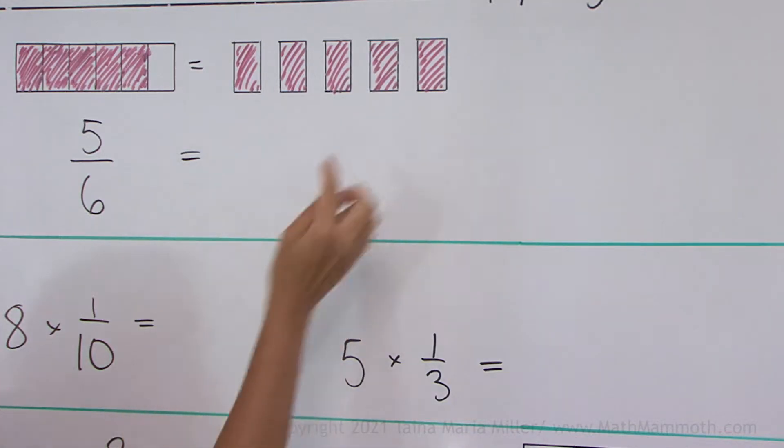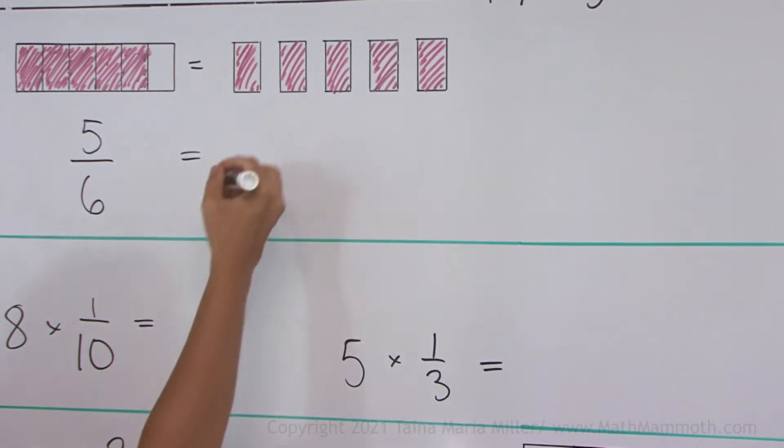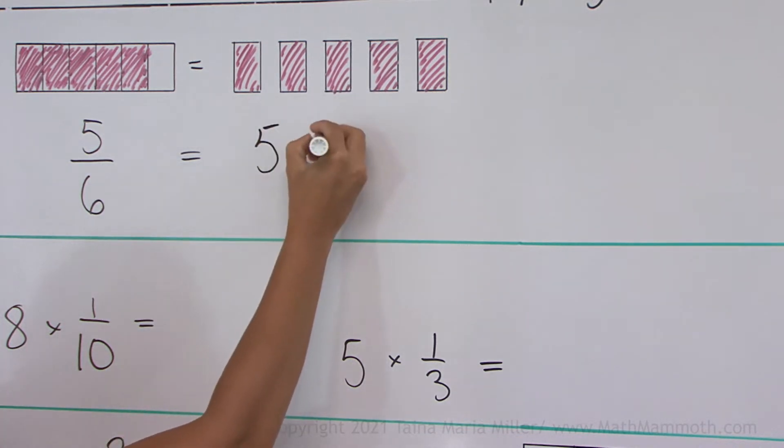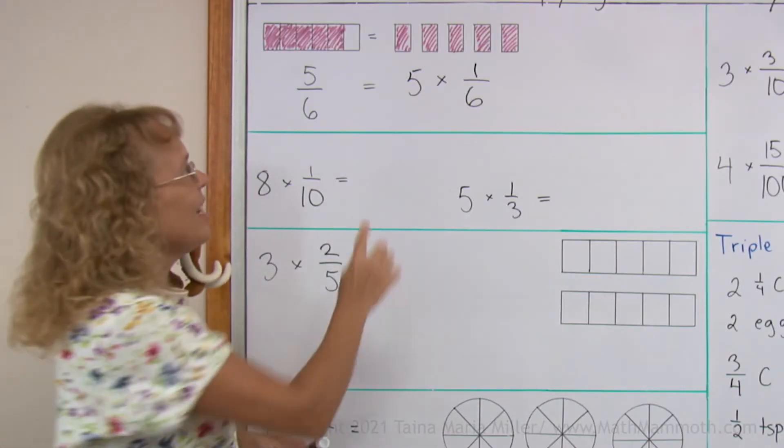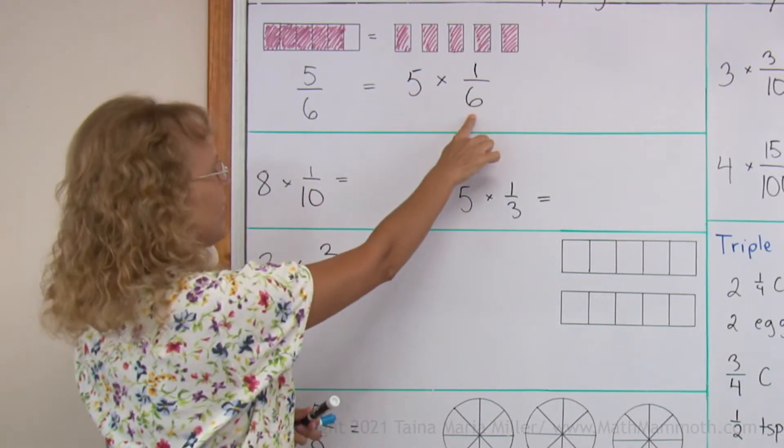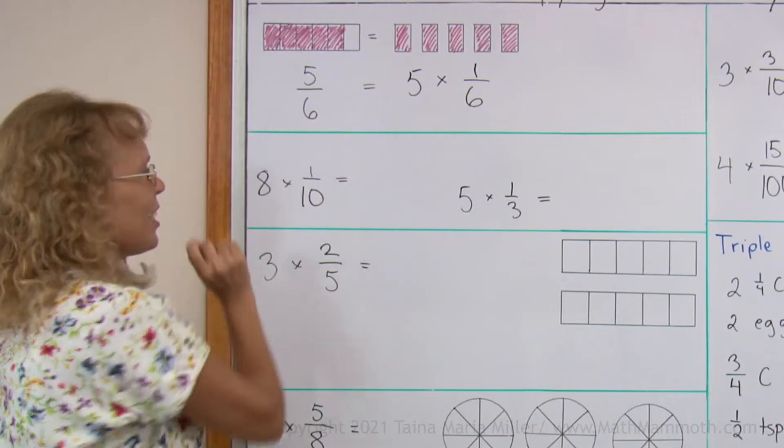But I can write this as a multiplication. I can write it as 5 times 1 sixth. And that is really simple, right? 5 copies of 1 sixth equals 5 sixths.